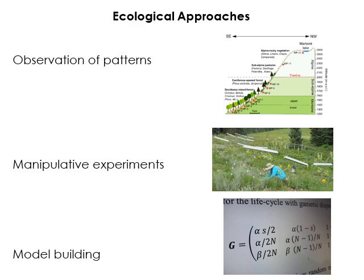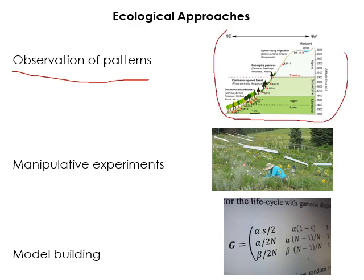Ecologists use three broad categories of approaches. We collect data and usually analyze those with statistics. The first approach is observation of patterns. In observational studies, we might go out into the field — for instance, if we have some idea of elevation influencing interactions between species or some facet of species metabolism — and we might collect data along an elevational transect, then analyze those data to see if there are patterns.